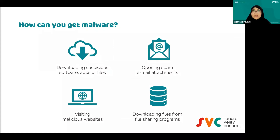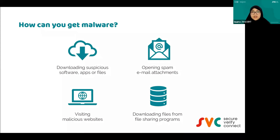How can you get malware or spyware or any other bad software? First and foremost, it's usually because of things we download — suspicious-looking software, applications, or files. Next, we receive spam emails with attachments and tend to open the attachment without scanning it first. Also, visiting malicious websites can get you malware — you browse the site and in the background it downloads spyware or malware.